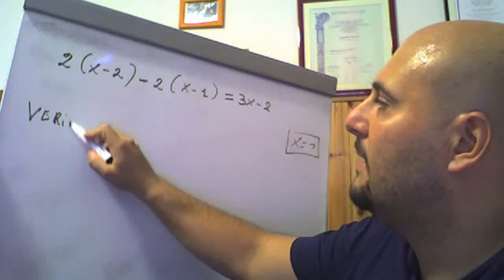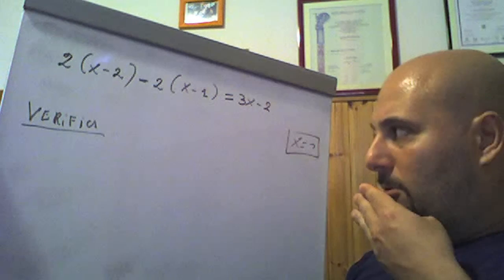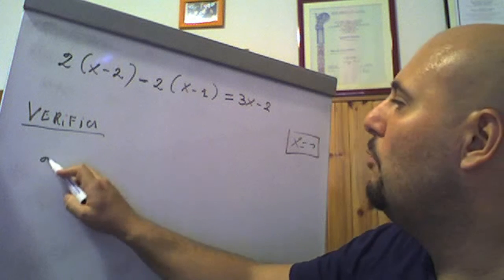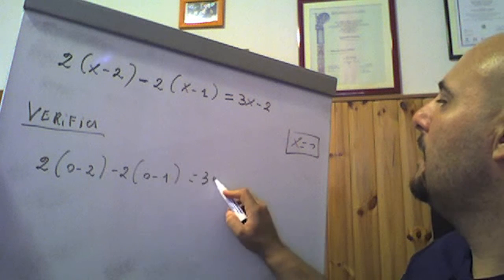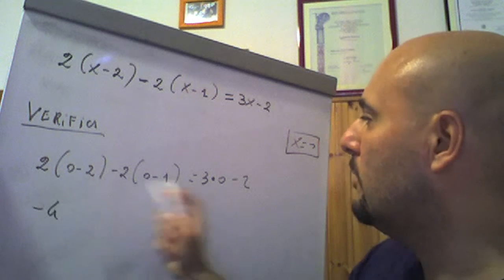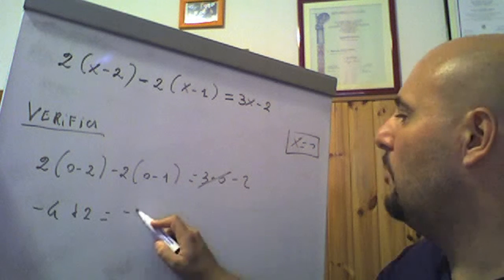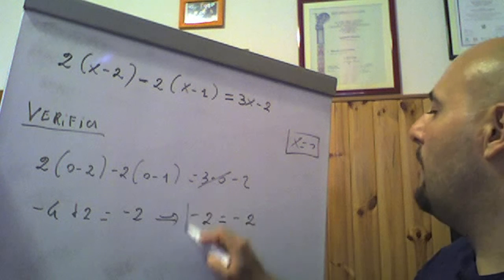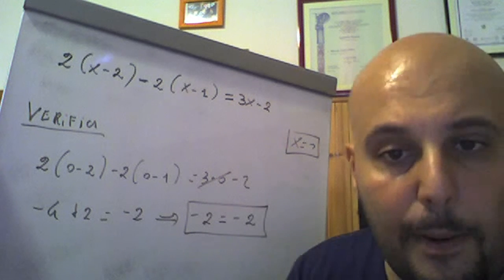It can be called either proof or verification — it's the same thing. It is evident that we do the proof in these early exercises. Substituting x = 0: 2(0 − 2) − 2(0 − 1) = 3·0 − 2. We get 0 − 2 = −2, so 2·(−2) = −4; 0 − 1 = −1, so (−2)·(−1) = +2. On the right, 3·0 = 0, so −2. We get −4 + 2 = −2, which gives −2 = −2: identity absolutely verified, so x = 0 is the solution.